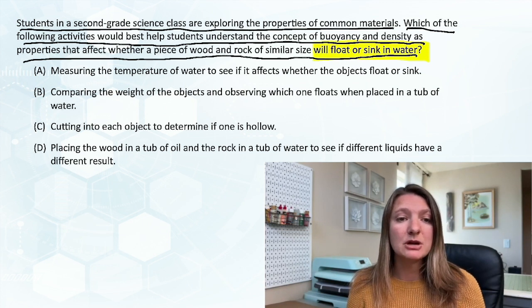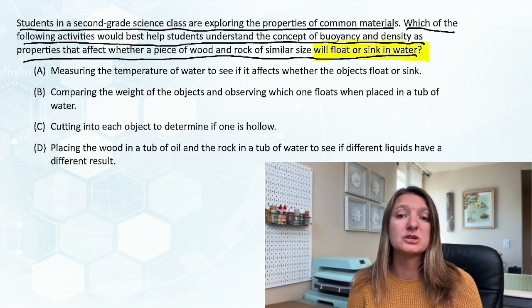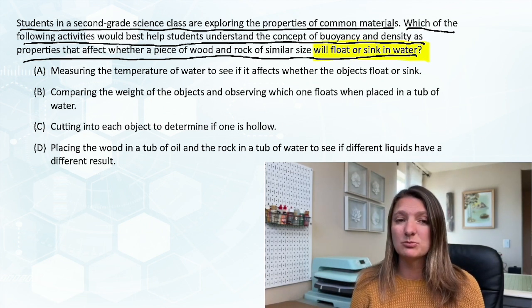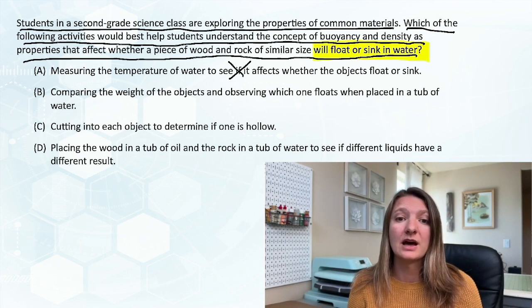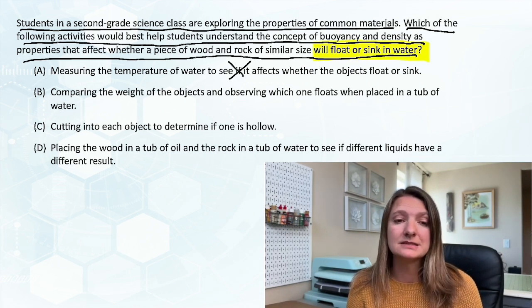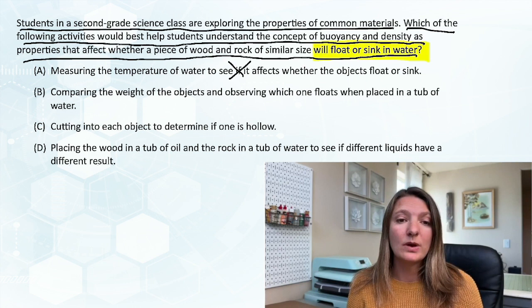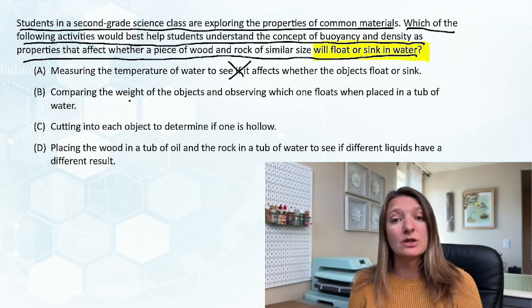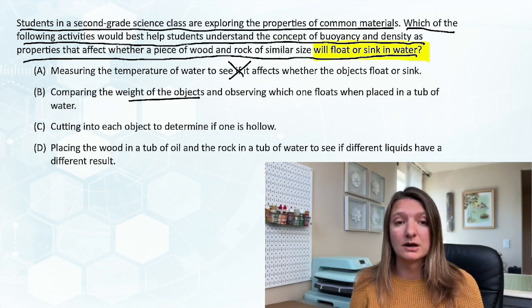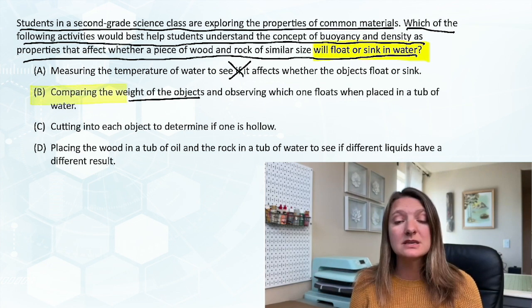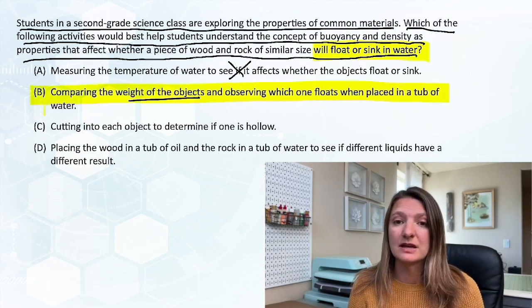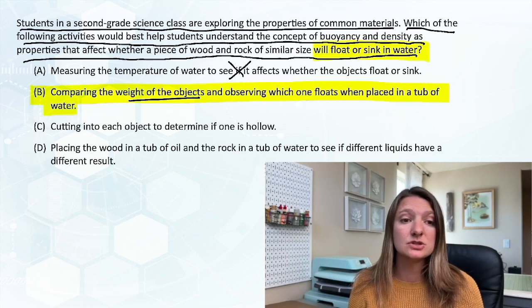So A, measuring the temperature of the water to see if it affects whether the object floats or sinks. Yes, that's buoyancy, but temperature does not have to do with how buoyant something is. B, comparing the weight of the objects and observing which one floats when placed in a tub of water. So this is the weight which relates to the density. This does affect buoyancy. So our answer is going to be B.